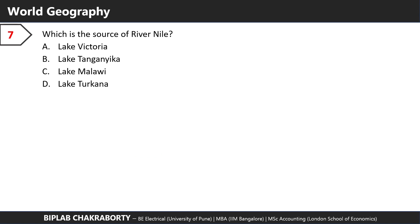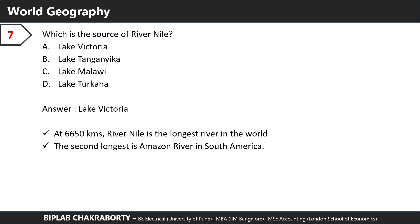Which is the source of the River Nile? The answer is Lake Victoria. At 6,650 kilometers, the River Nile is the longest river in the world. The second longest is the Amazon River in South America.